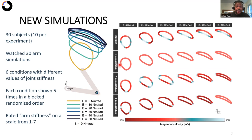So we had 30 new subjects, 10 for each of the three new experiments, and they watched 30 arm simulations, each with six different elbow stiffness conditions shown here. And they saw each condition five times in a block randomized order, and then they rated their stiffness on a scale from one to seven.